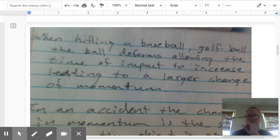Those deformations allow the time of impact to increase. So the force of impact is the same whether this time increases or not. But during the collision between the bat and the ball, you start out with zero force, then it rises to maximum force, and then it decreases back to zero force as the baseball leaves the bat.